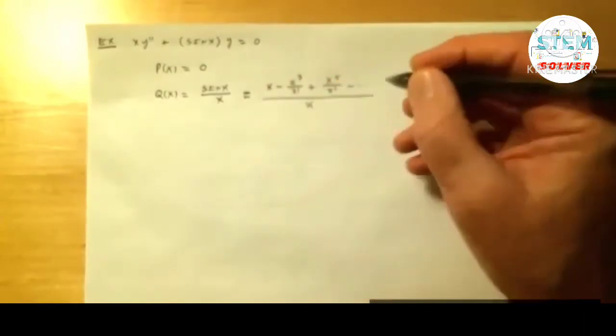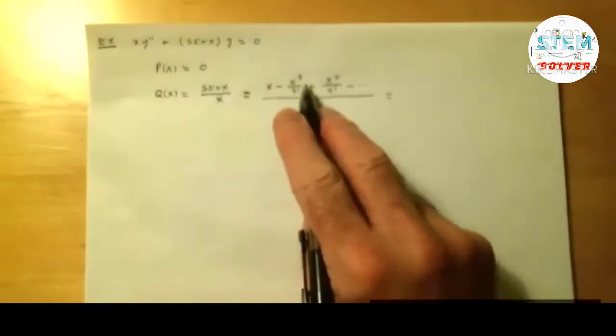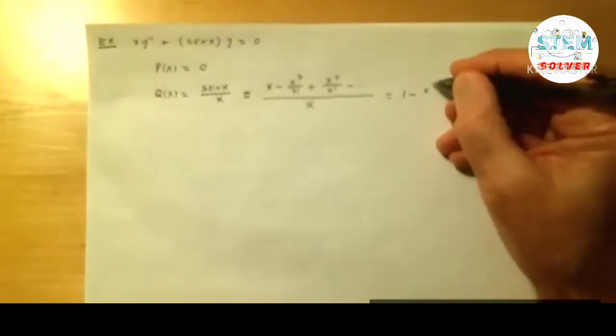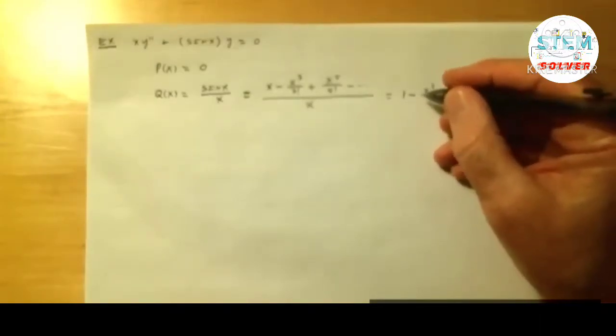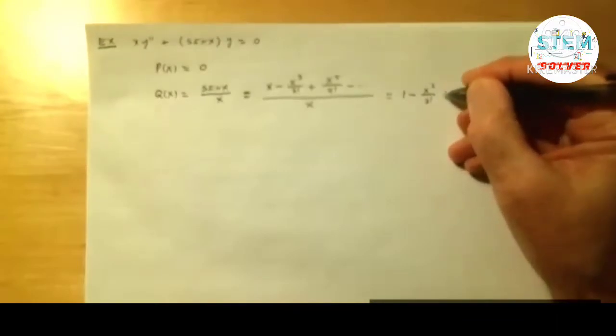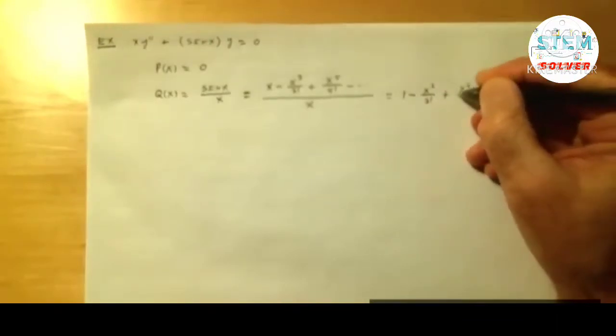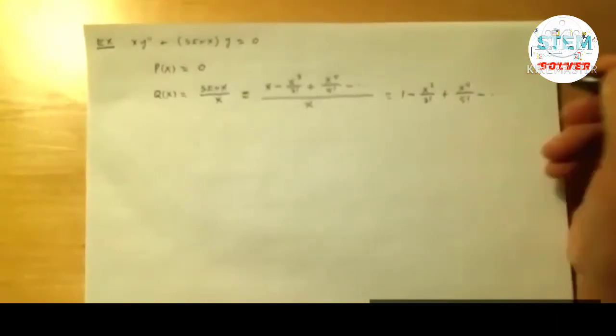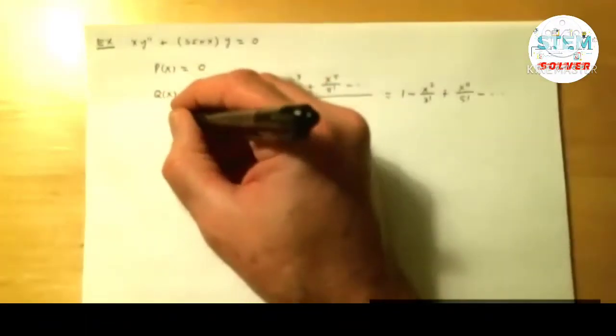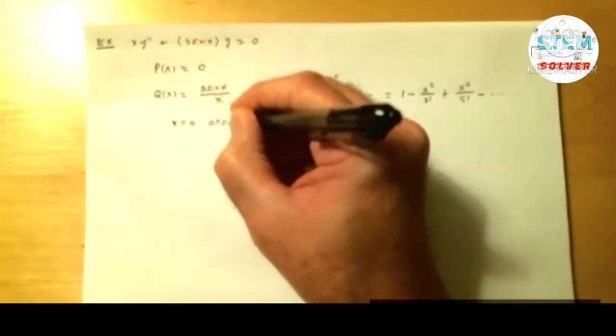And then you would divide by x. Here's the nice part: the x's will cancel, still leaving a polynomial. So you have 1 minus x squared over 3 factorial plus x to the fourth over 5 factorial minus, et cetera. So you have a polynomial, and that makes it analytic at zero. So at this point, you would say x equals zero is an ordinary point.